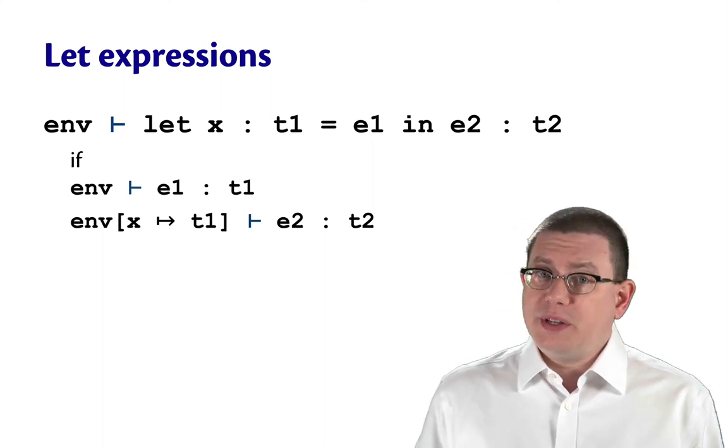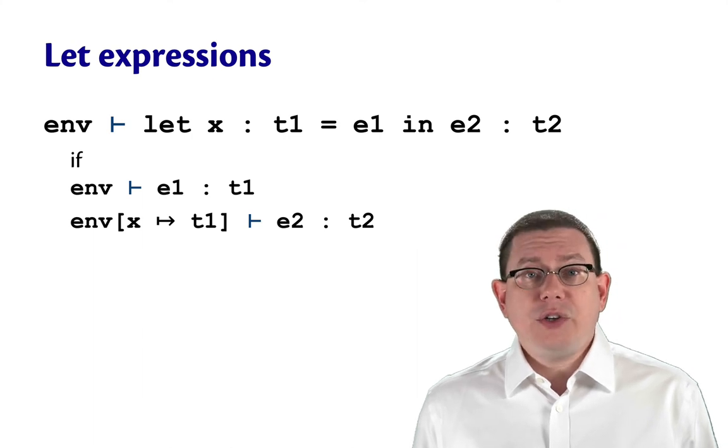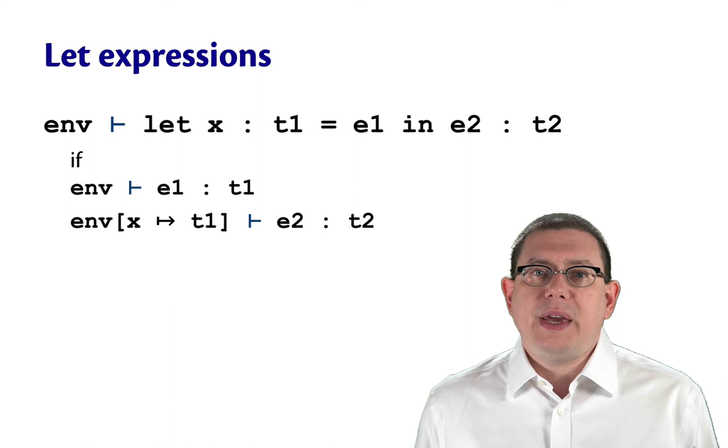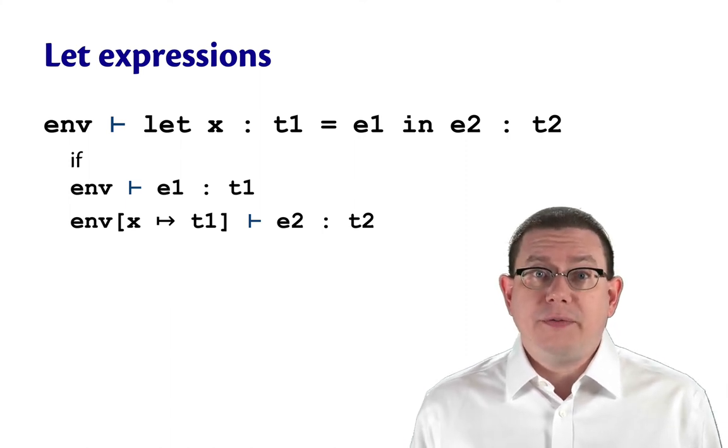In type checking, we're just recording the type. In evaluation, we're recording the actual value. But of course that type is going to be an approximation or an abstraction of the value.